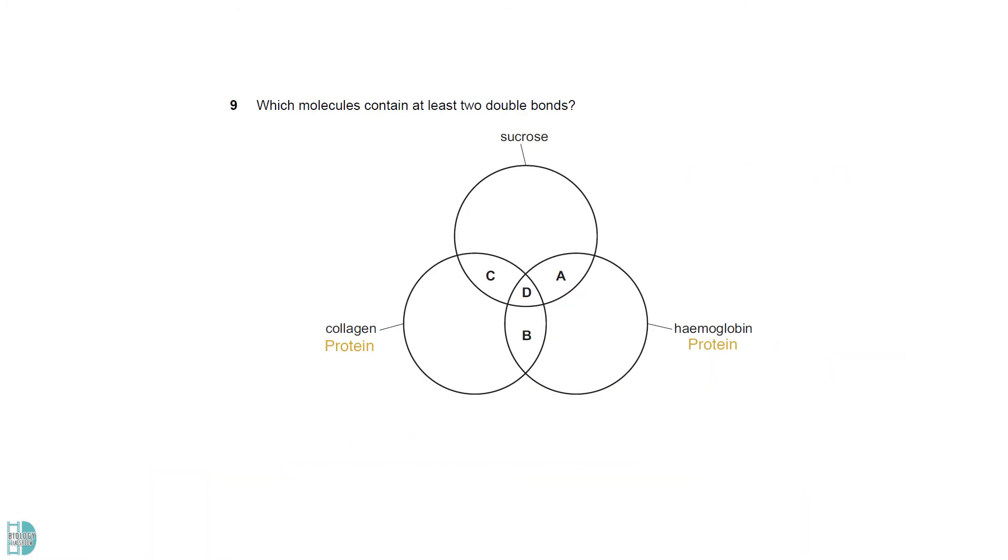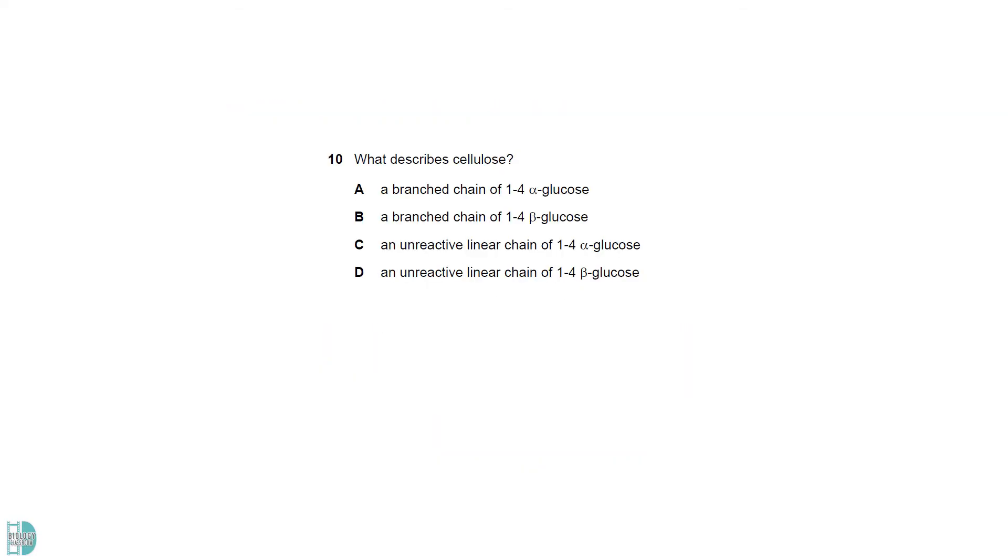Collagen and hemoglobin are proteins. Every amino acid in these proteins has a C double bond O at the carboxyl group. Cellulose is unbranched, so A and B are wrong. It is made up of beta-glucose, so the answer is D.